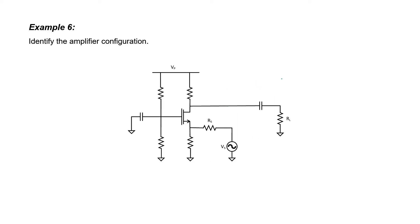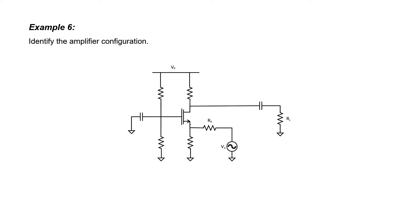What do we have here? We again have an N-channel MOSFET. There's our source, there's our gate, and there's our drain. The signal enters our amplifier at the source of this transistor and it exits at the drain. The gate is common. Therefore, this is a common gate configuration.